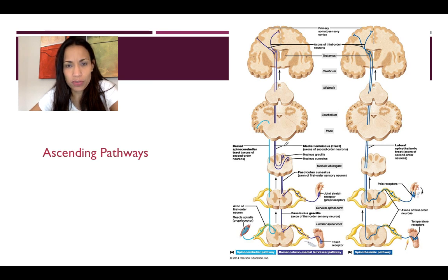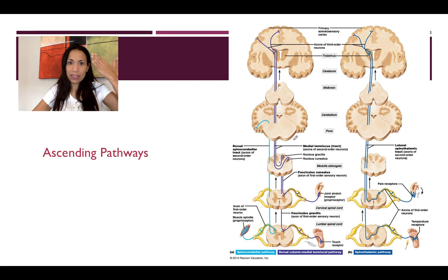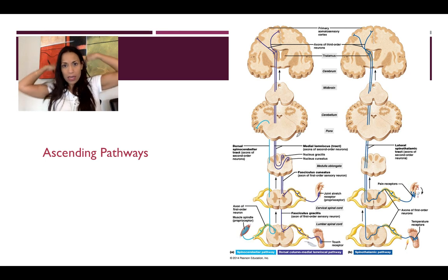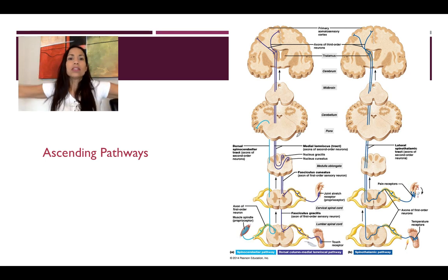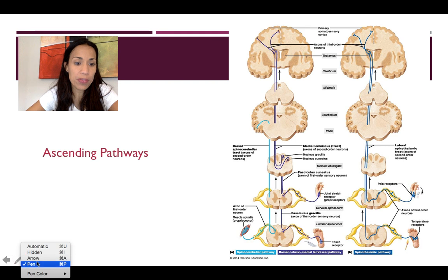In the nervous system in general, information travels in both ways — the sensory and the motor. Sensory on the back, motor in the front. So we are going to explain two pathways.